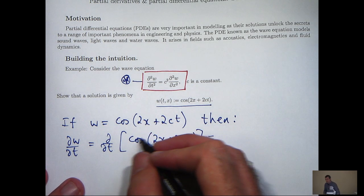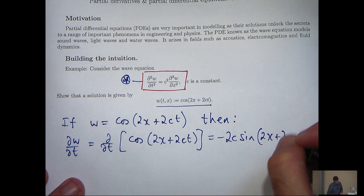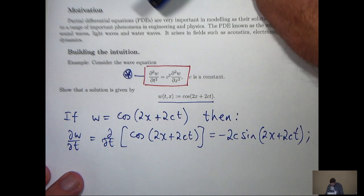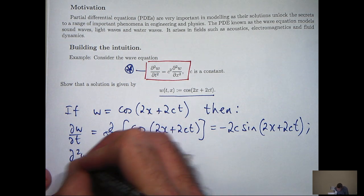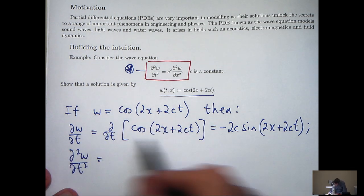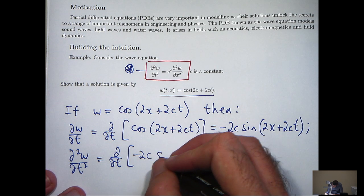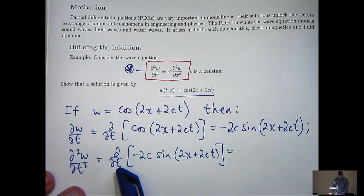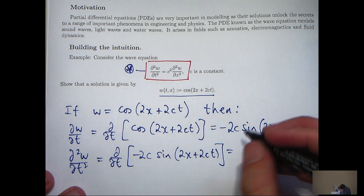That 2C will come to the front and the cos will go to a negative sine. Now let's calculate the second-order derivative d²W/dt². We go back to that first derivative and differentiate partially with respect to T again. Imagine the variable X is a constant, C is a constant anyway, and differentiate normally with respect to T. That 2C is going to come to the front again, and sine will go to cosine.